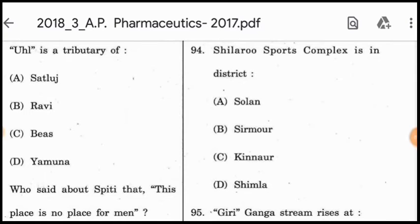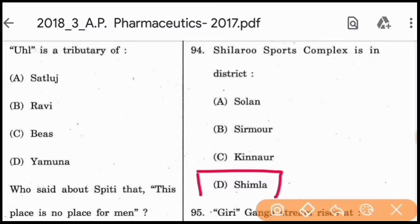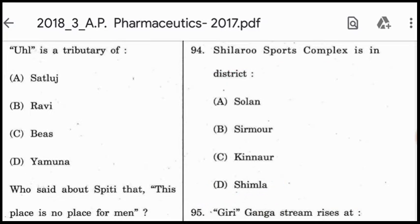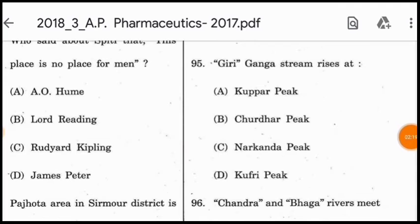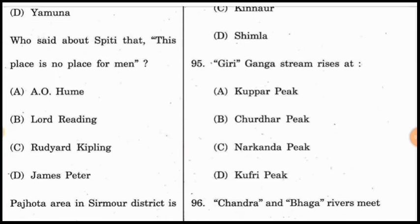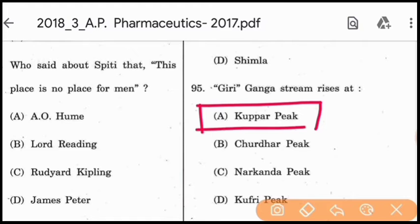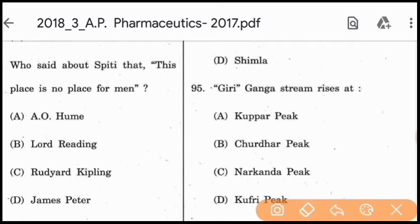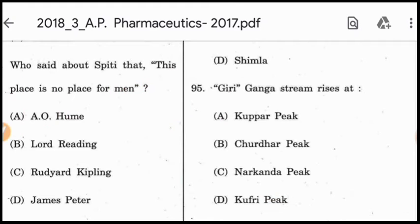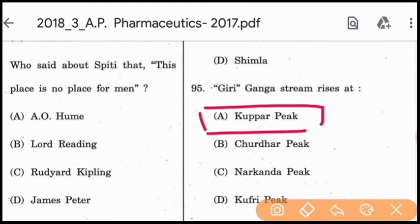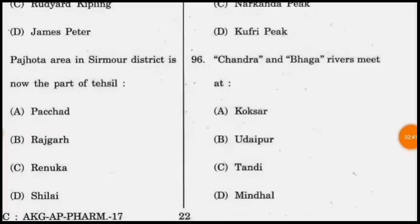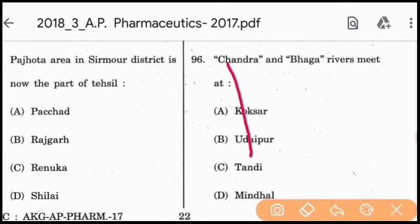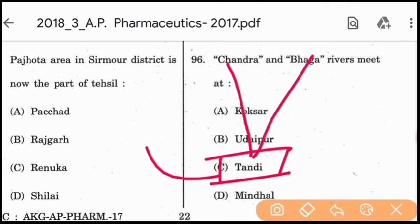Question 94: Shilaru Sports Complex is in district Shimla. Question 95: The Giri Ganga stream rises at Cooper Peak, which is in Jubbal Tehsil of Shimla district, and the Giri is a tributary of River Yamuna. Question 96: The Chandra and Baga rivers meet at Tandi and form the Chenab river.